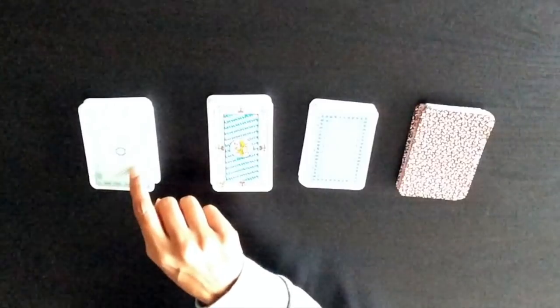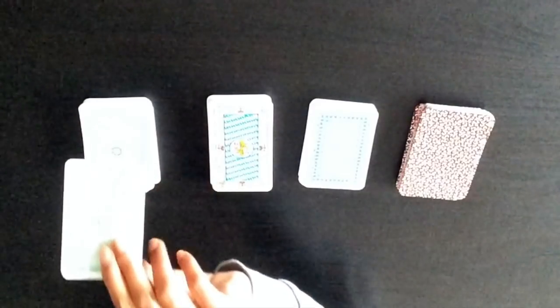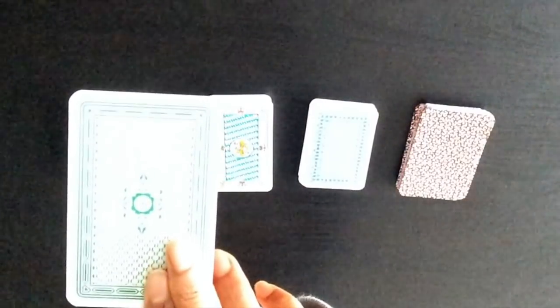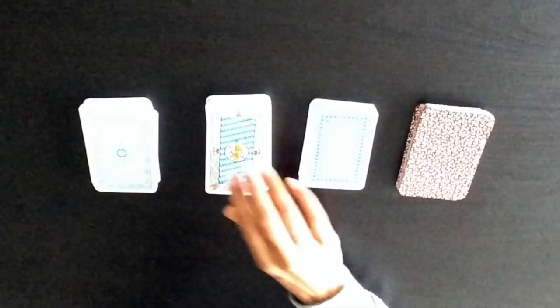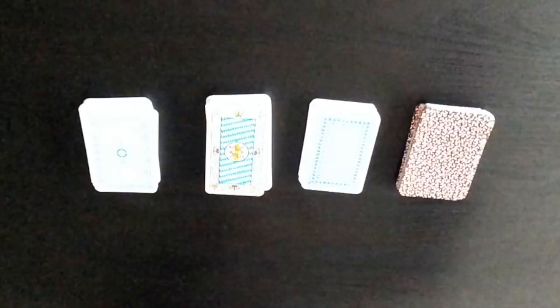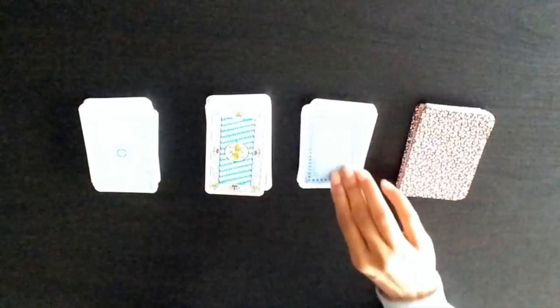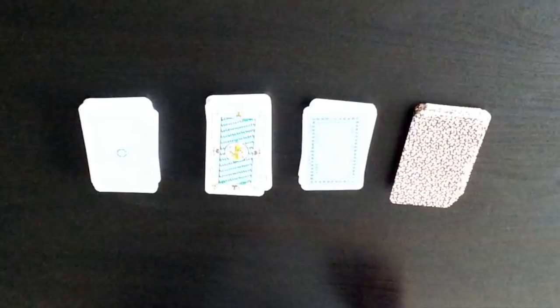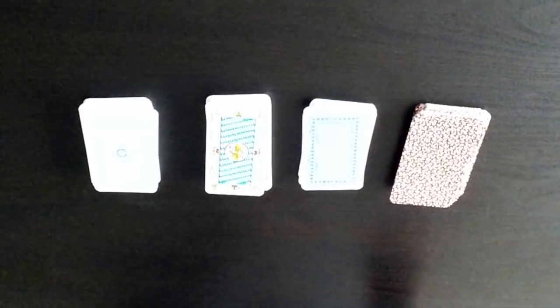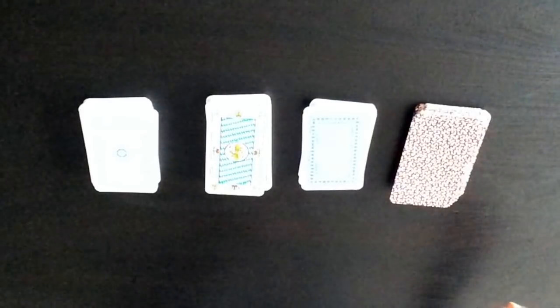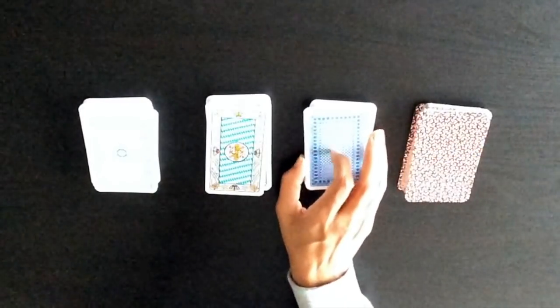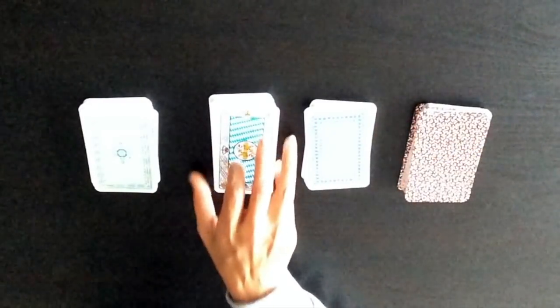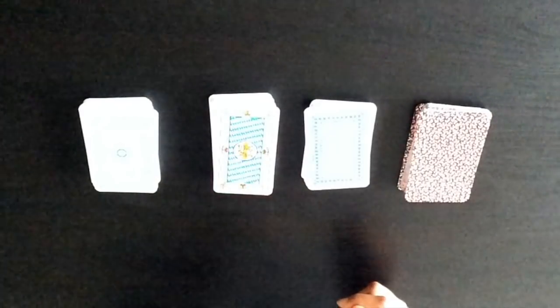You have a choice of deck one with that back here, deck two, deck three with this back here, and deck four. We are asking the question: are they coming back? The spread I'm going to do will yield a yes or no answer.